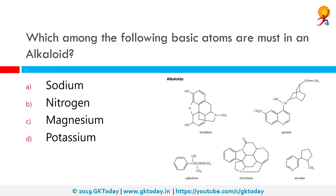Which among the following basic atoms are present in alkaloids? The correct answer is nitrogen. An alkaloid is a class of naturally occurring organic compounds that mostly contain basic nitrogen atoms. This group also includes some related compounds with neutral and even weakly acidic properties, and some synthetic compounds of similar structure may also be termed alkaloids.